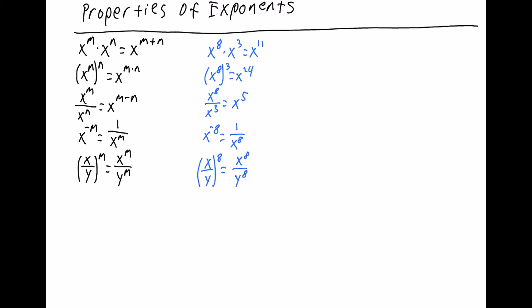If you raise a fraction to an exponent, you're raising each number in the fraction to that exponent. So if you have x over y to the 8th, it's x to the 8th over y to the 8th. If you raise a fraction to a negative exponent, that flips the fraction — it gives you the reciprocal. So if you take x over y and raise it to a negative exponent, it's y to that exponent over x to that exponent. So x over y to the negative 8 is y to the 8 over x to the 8.